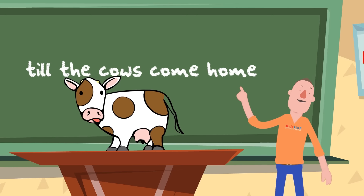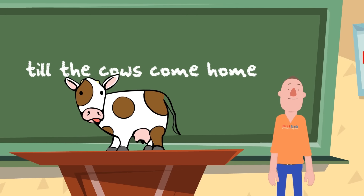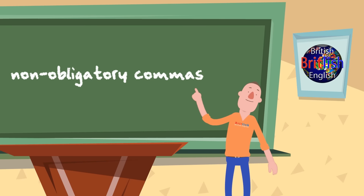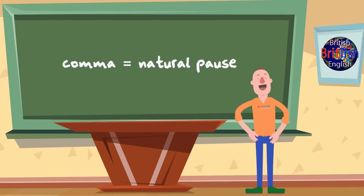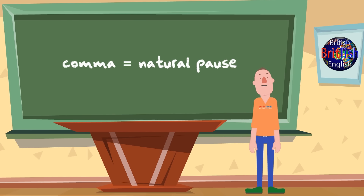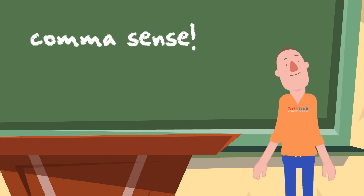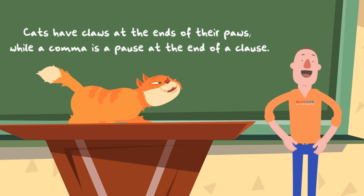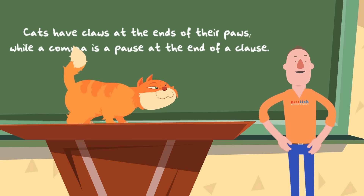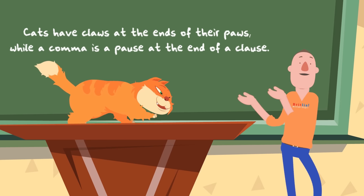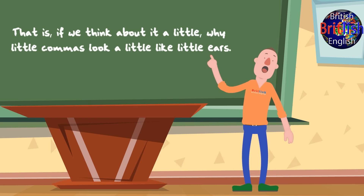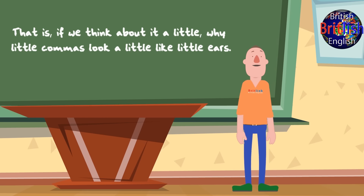You can study the use of commas until the cows come home, but someone will always have a different opinion when it comes to non-obligatory commas. My advice is: if in doubt, put a comma where you have a natural pause. It's comma sense. And remember that cats have claws at the ends of their paws, while a comma is a pause at the end of a clause — that is, if we think about it a little, why little commas look a little like little ears.